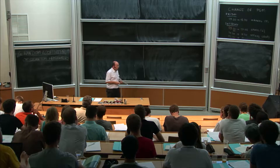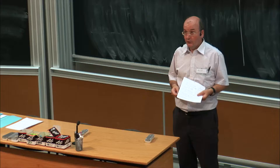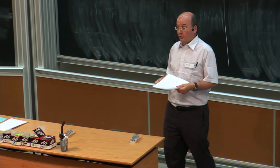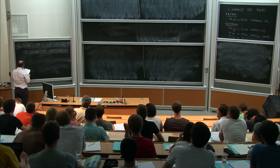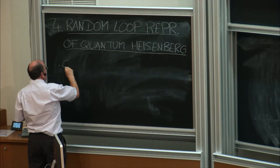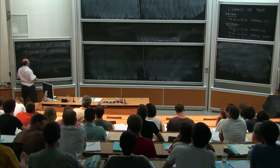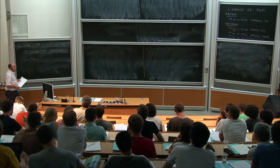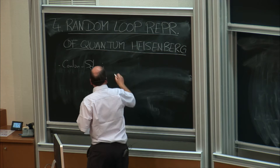These ideas go back to Feynman in 1953 — about 60 years ago. He introduced what came to be known as the Feynman-Kac representation for the interacting Bose gas, introduced directly in that context. The representations I'm going to discuss here are more recent. They are motivated by Conlon-Solovey, who used a random walk approach to the Heisenberg ferromagnet to get some interesting lower bounds for the free energy.